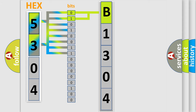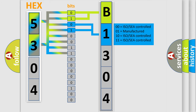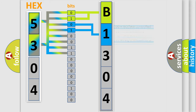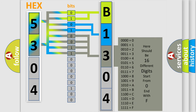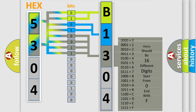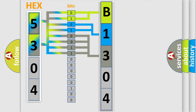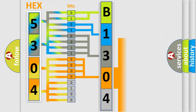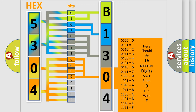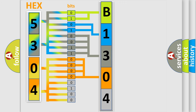The next two bits determine the second character. The last bits of the first byte define the third character of the code. The second byte is composed of a combination of eight bits. The first four bits determine the fourth character, and the combination of the last four bits defines the fifth character. A single byte conceals 256 possible combinations.